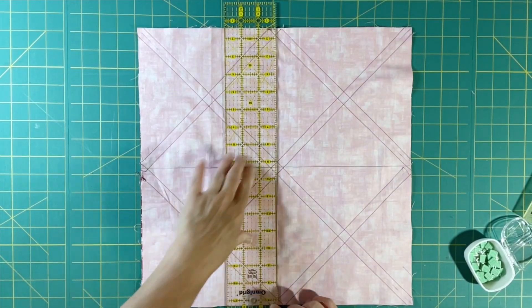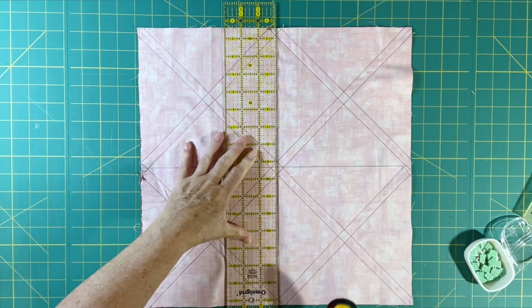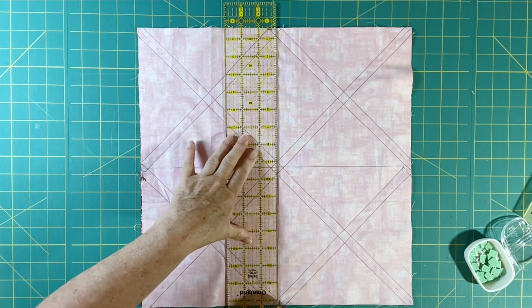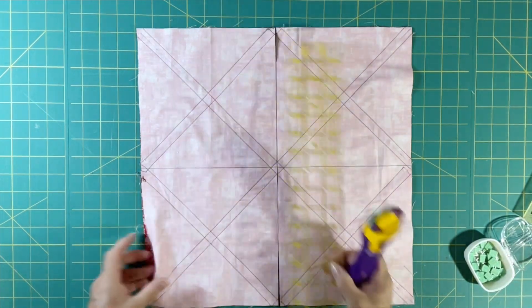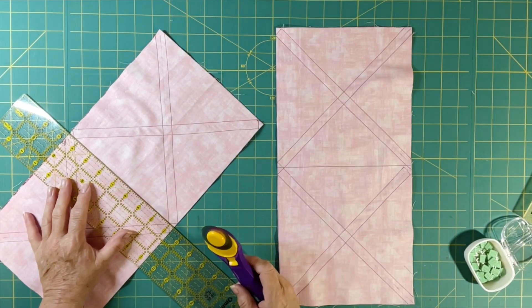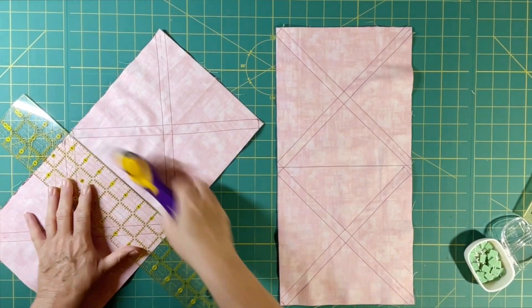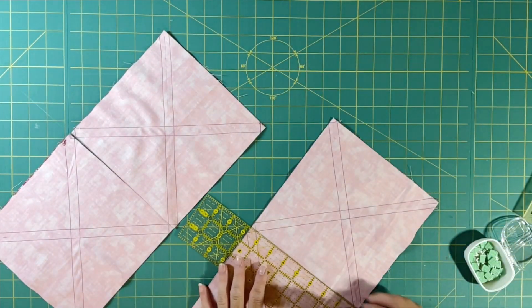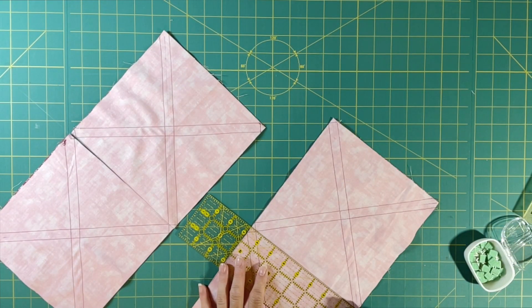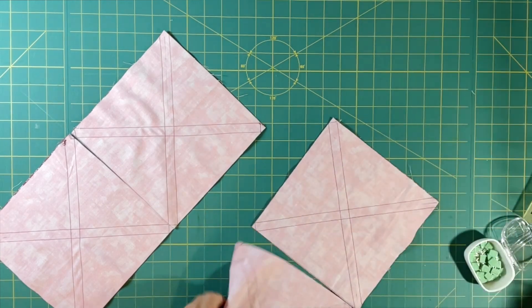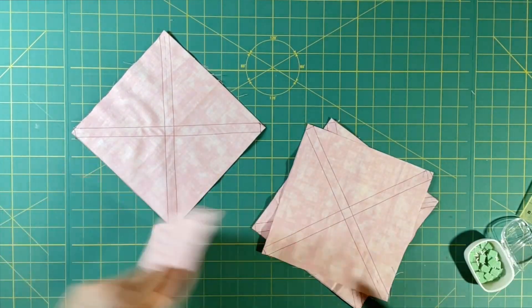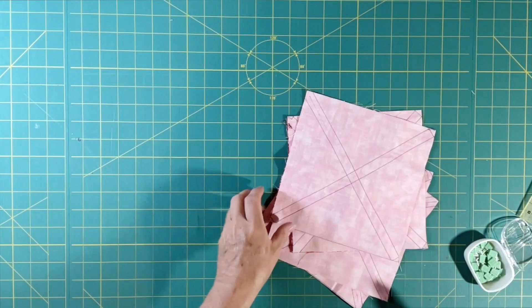With my rotary cutter. You can do it with the scissors too, it's not a big deal either way. So now you have four pieces that you can work with instead of one large piece.